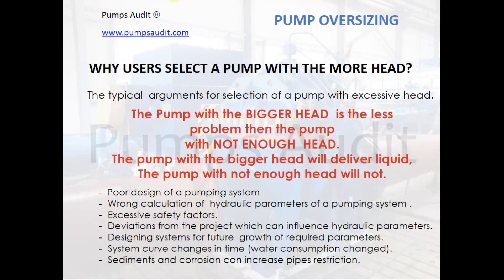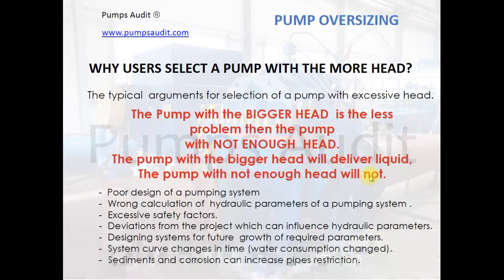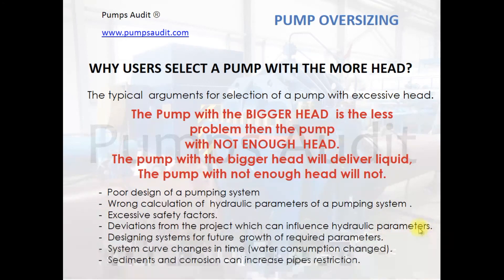Why do pump users select a pump with more head? The most popular answer is that a pump with a bigger head is less of a problem than one with insufficient head — the pump with bigger head will deliver liquid, while the pump with insufficient head will not. There are different reasons for selecting pumps with bigger parameters: poor design of a pumping system, wrong calculation of hydraulic parameters, excessive safety factors, deviation from the project which can affect hydraulic parameters, designing a system for future growth, changes in system curve over time such as changes in water consumption, and sediments and corrosion which can increase pipe restriction.